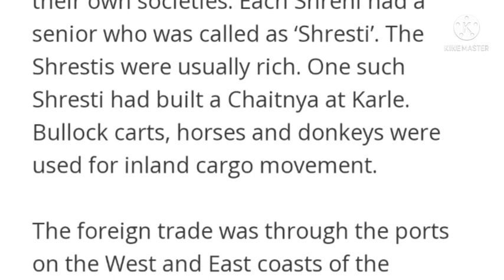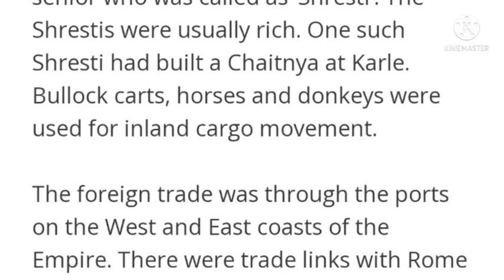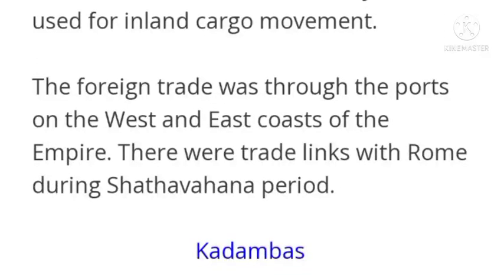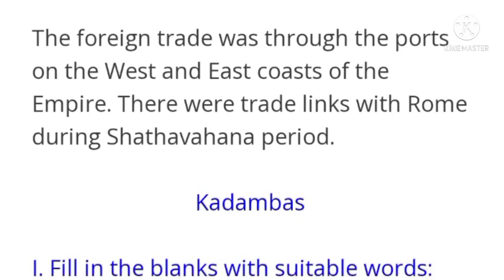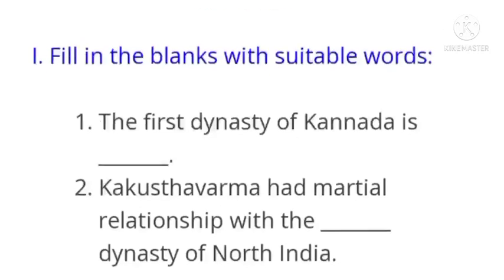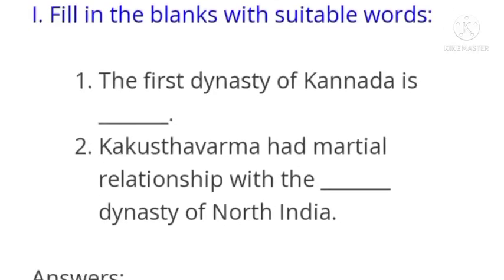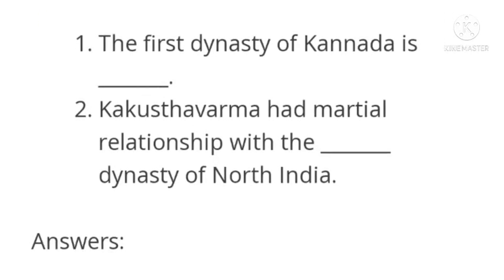One such Shirishti built a Chaitya at Karle. Bullock carts, horses, and donkeys were used for inland cargo movement. Foreign trade was through the ports on the west and east coast of the empire. There were trade links with Rome during the Shatavahana period.